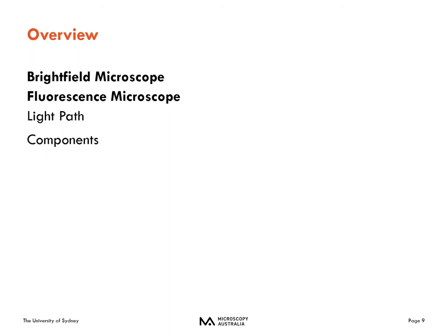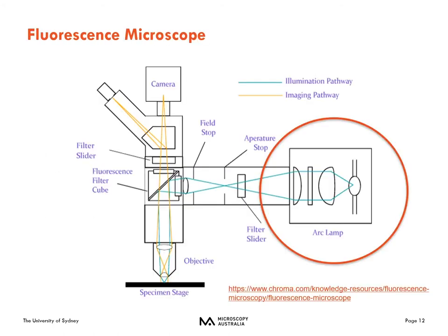Let's talk about each of those components in detail — starting with the light source, then filters, objectives, and the camera. Common light sources in fluorescence microscopy include the arc mercury lamp, the newer metal halide lamp, xenon lamps, and LEDs, which are now becoming a very popular light source for fluorescence microscopy.